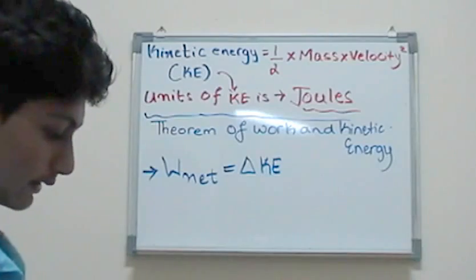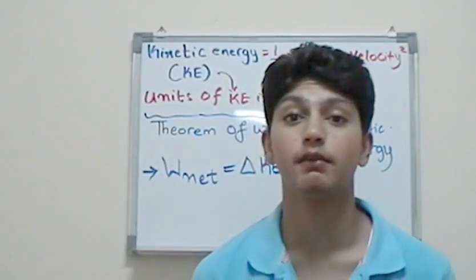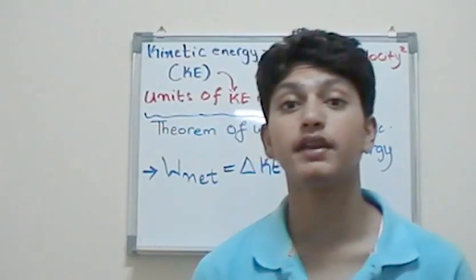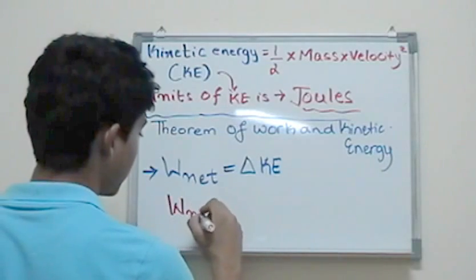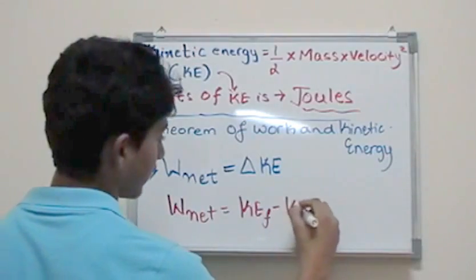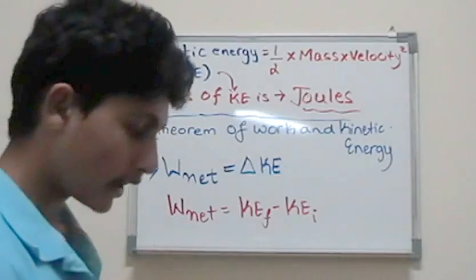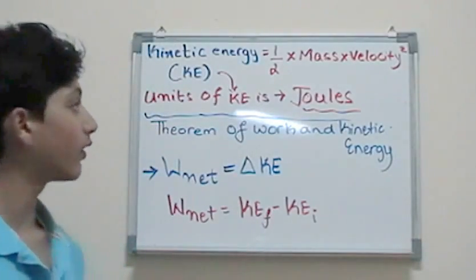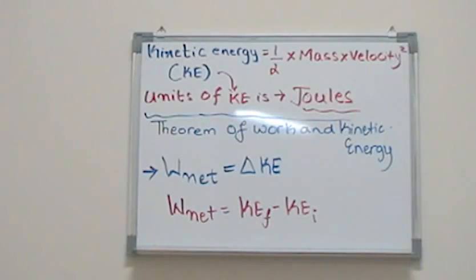So what does the theorem say? The theorem says the net work, the final work is equal to change in KE. What does delta mean here? Delta, if you have a delta, it means change in something. When there is change in something, there is delta in something. So we can write this as W_net is equal to KE_f minus KE_i. All it means is final kinetic energy minus initial kinetic energy. So now that we have talked a lot about these equations, let's go ahead and solve some examples.